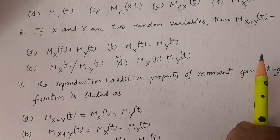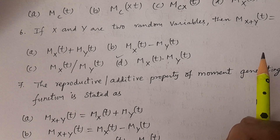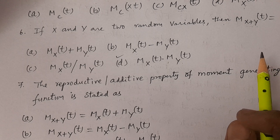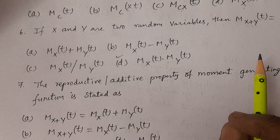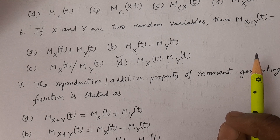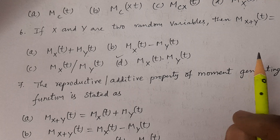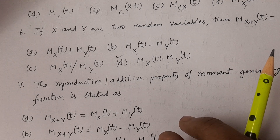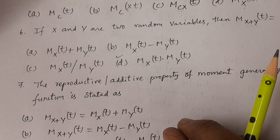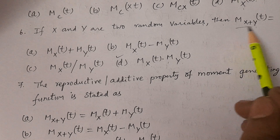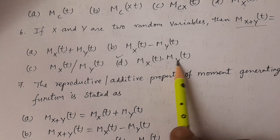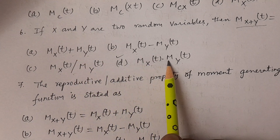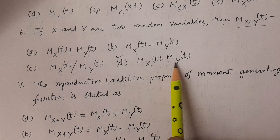The general additive property: MX1+X2+...+Xn(t) = MX1(t) · MX2(t) · ... · MXn(t). For two variables, MX(t) · MY(t) — not plus, not minus, not divided. The answer is option D: MX(t) into MY(t).